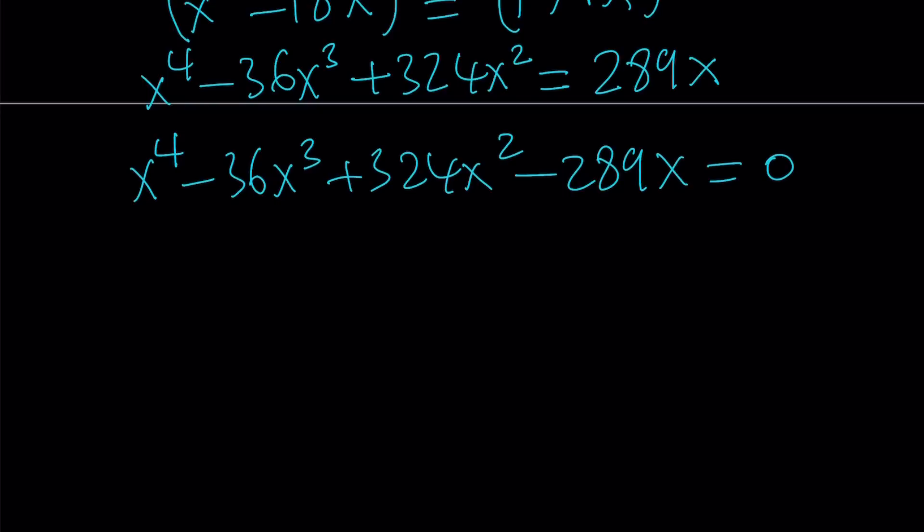And in this case, that happens to be the case because if you check 1 minus 36 plus 324 minus 289, you're going to notice that 1 plus 324 is 325, and negative 36 plus negative 289 is also negative 325. So this gives you 0, which means x equals 1 is a solution.